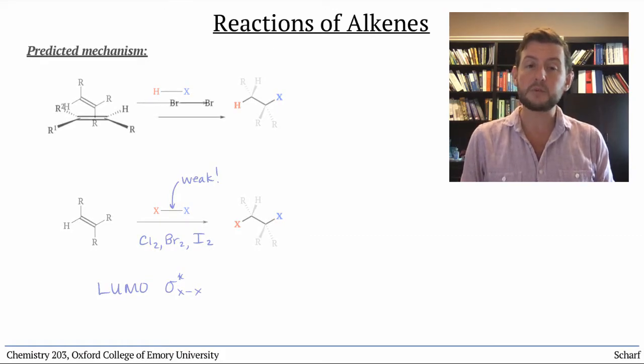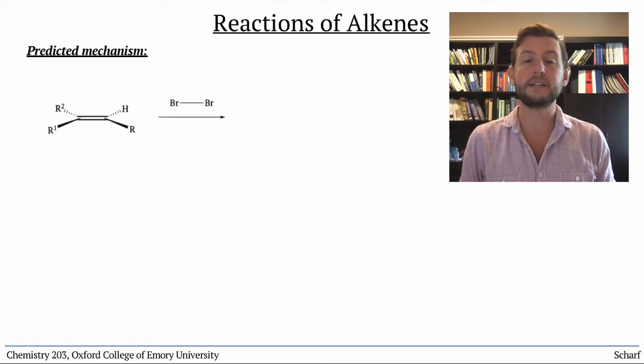So let's try to predict what would happen if an alkene reacted with bromine, Br2. The HOMO of the alkene, π CC, would donate into the LUMO of Br2, σ* BrBr.